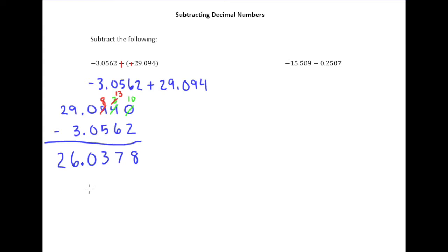And then we have to decide, is this positive or negative? Because the negative's on the smaller absolute value and positive's on the larger absolute value, positive wins. So the answer is 26.0378, or to say it properly, 26 and 378 ten thousandths.